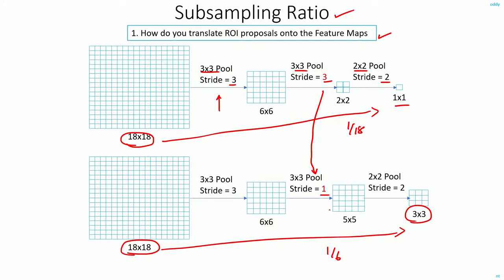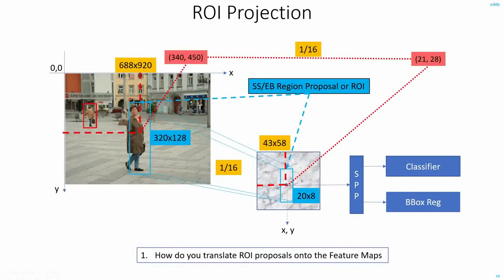Similarly, I can calculate the subsampling ratio for whatever network I am using. Now with that information, let's assume that the subsampling ratio of the network that I am using is 1 to 16. Maybe it's AlexNet or VGGNet or any other network. Let's say it's 1 to 16.